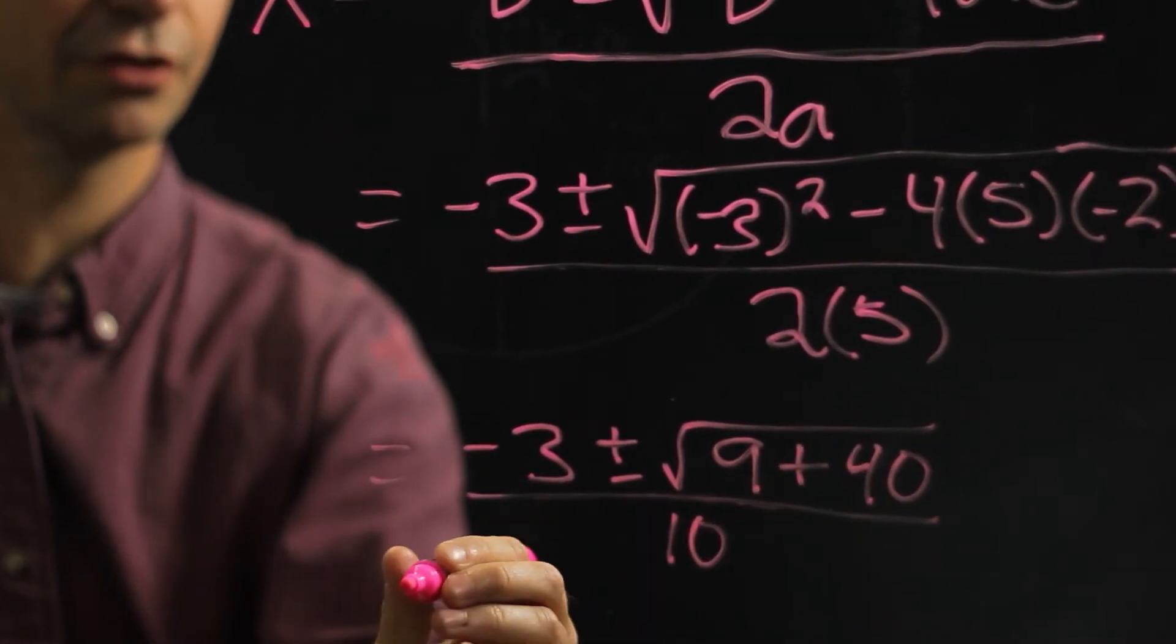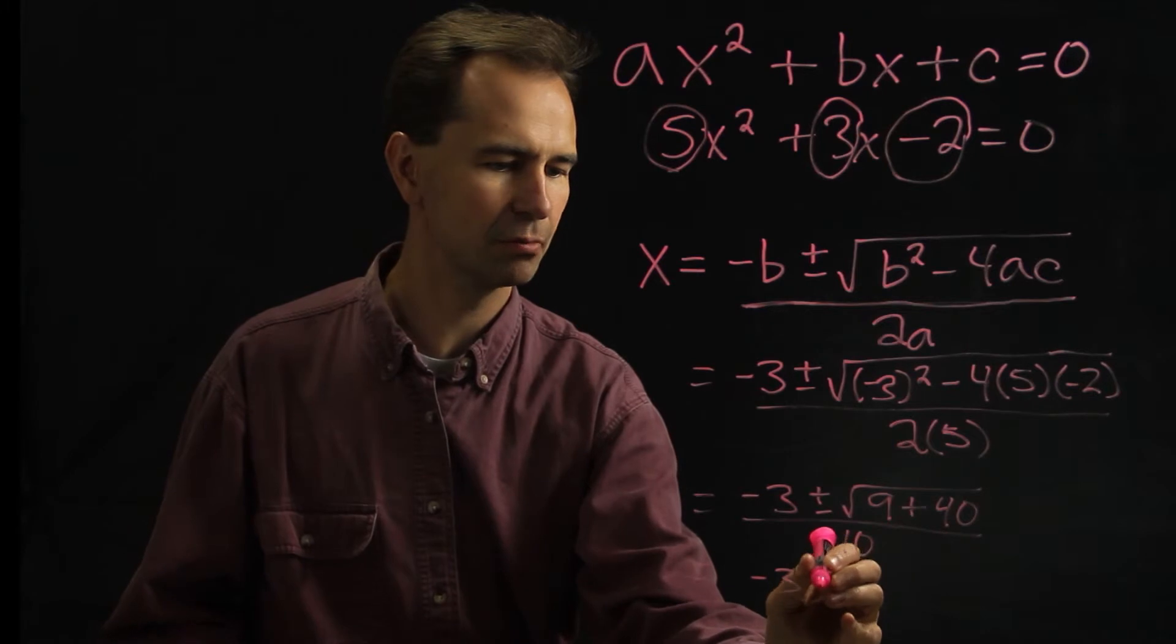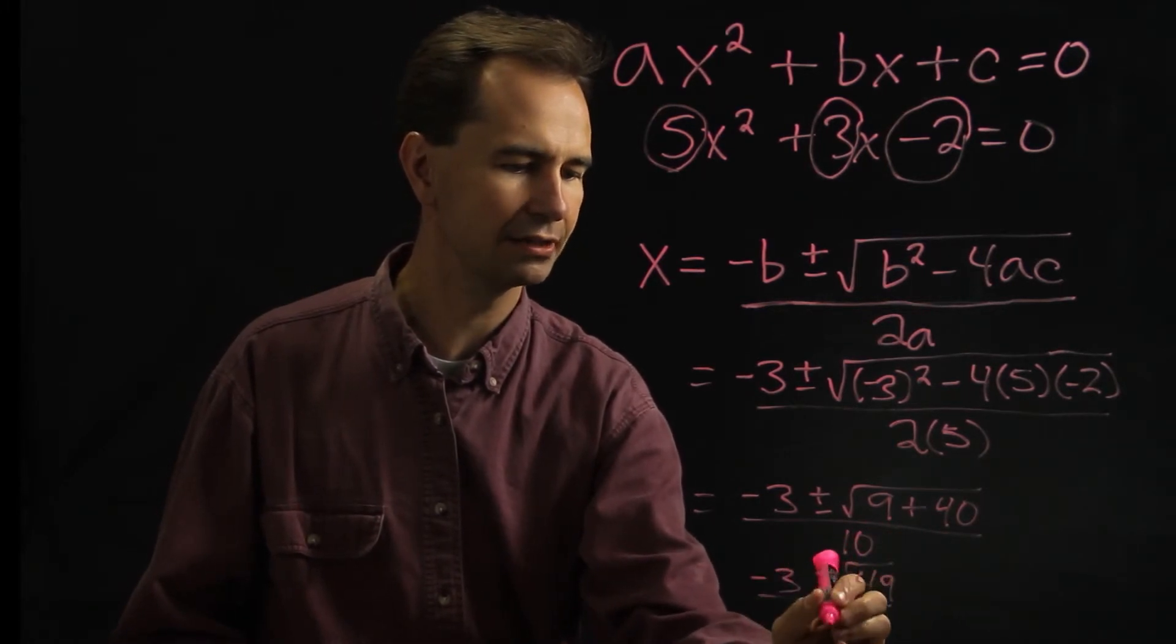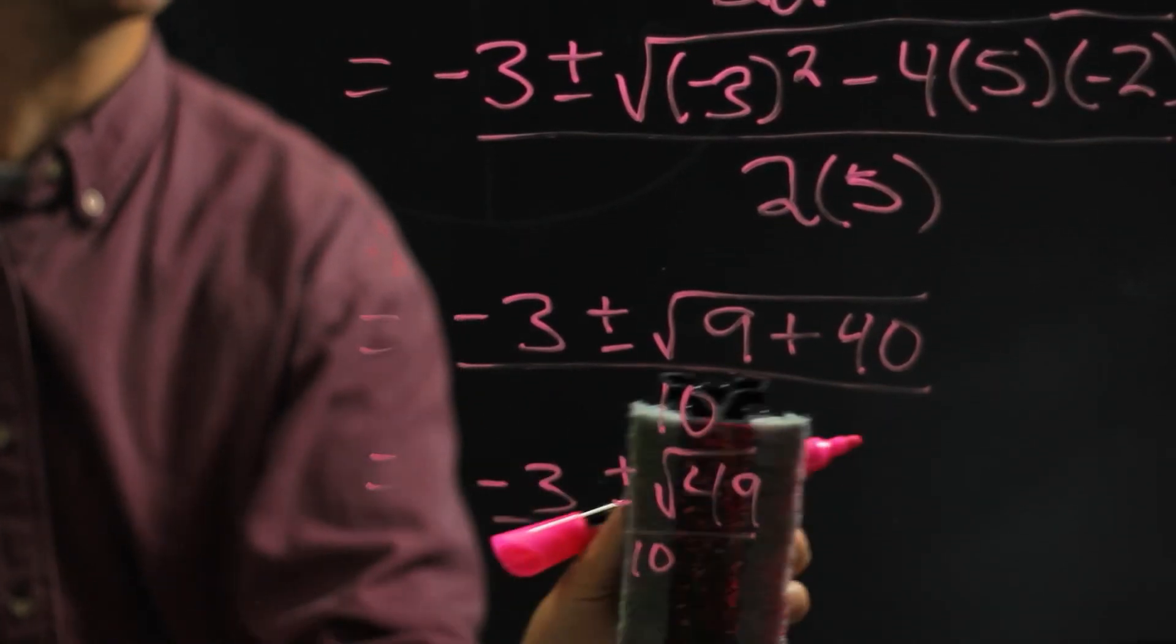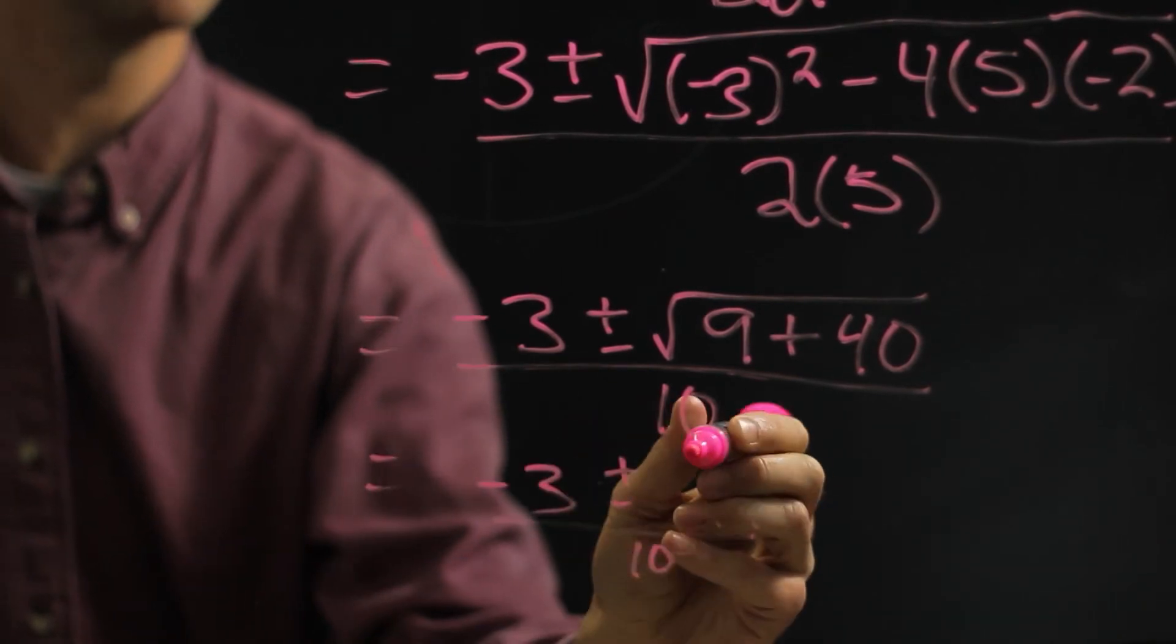So taking that a step further, we have negative 3, plus or minus the square root of 49, divided by 10. And you notice that square root of 49, that's the same as 7. So let's just erase that and put a 7 there instead.